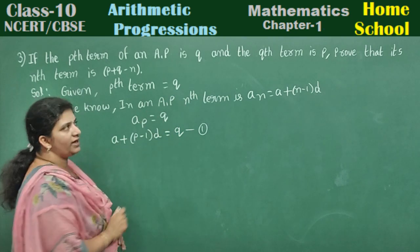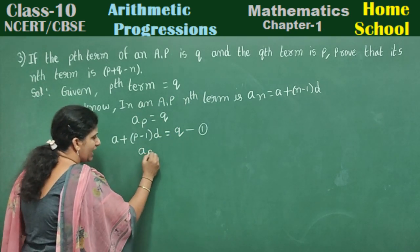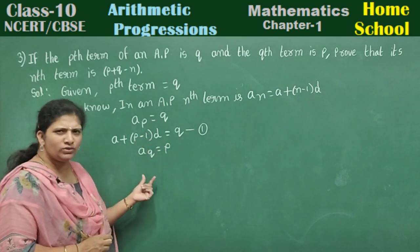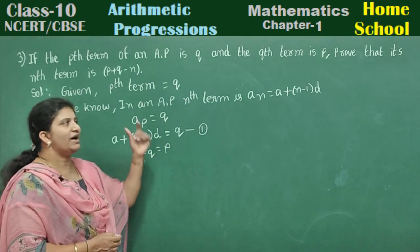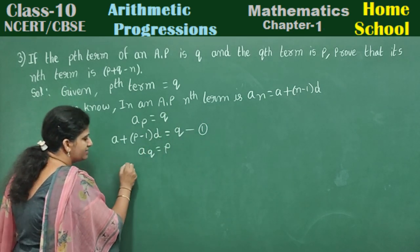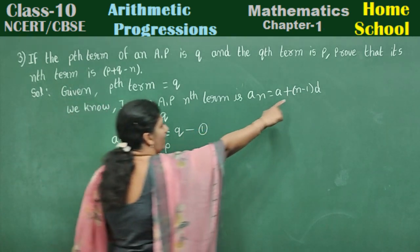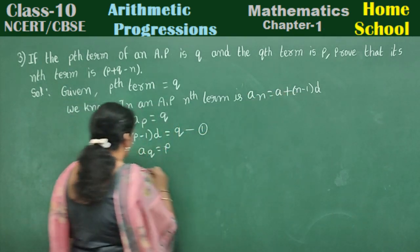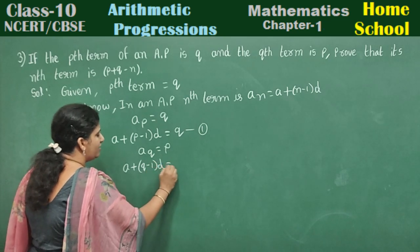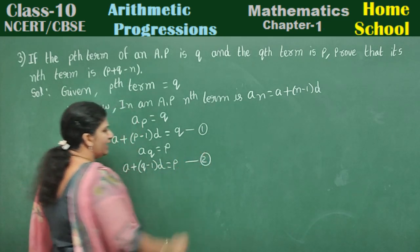The second given: qth term is p, that is a_q is equal to p. By the general term formula, wherever you have n substitute q: a plus q minus 1 into d is equal to p. Mark as second equation.